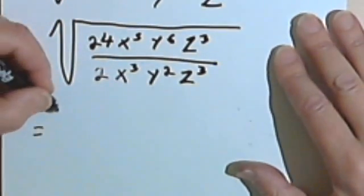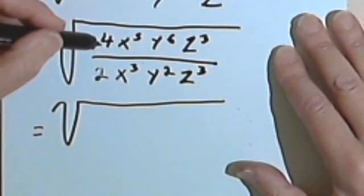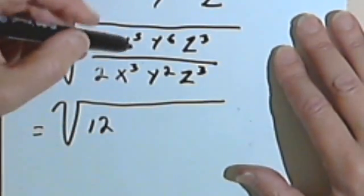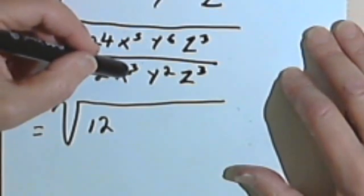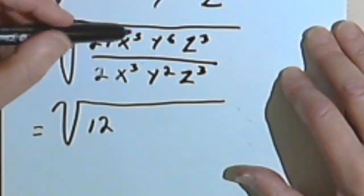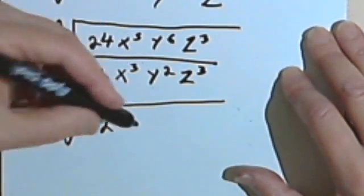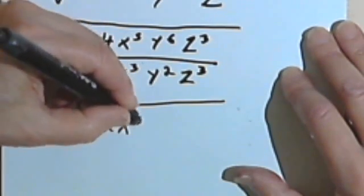So let's see what I have. I still need my square root sign. 24 divided by 2 is going to give me a 12. x to the 5th divided by x to the 3rd. So remembering our rules for exponents, we're going to take this 3 and subtract it from the 5 and we'll just get an x squared over here.